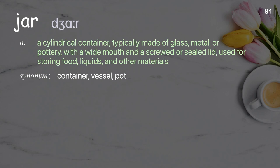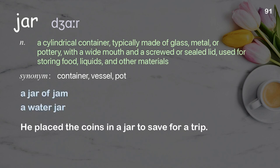Jar: a cylindrical container typically made of glass, metal, or pottery with a wide mouth and a screwed or sealed lid, used for storing food, liquids, and other materials. Examples: a jar of jam, a water jar. He placed the coins in a jar to save for a trip.